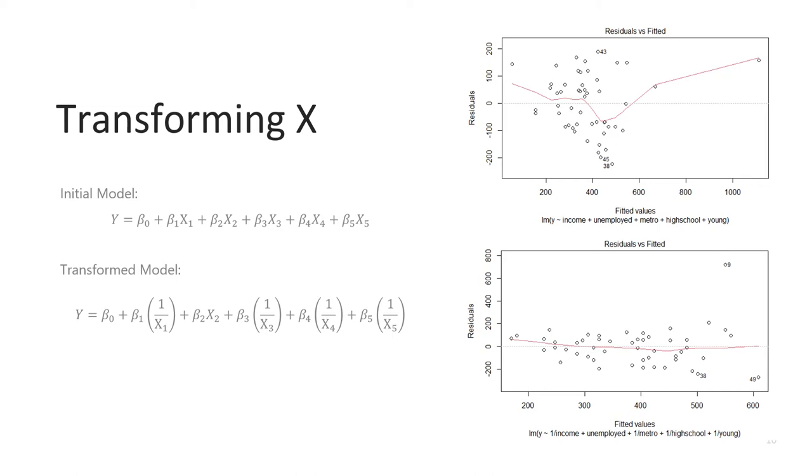Because our data violated linearity assumption but satisfied constant variance and normality, we looked at transforming some of the predictors to straighten out the data. This process is often a lot of trial and error, and after trying many different combinations of transformations, the following model produced the most linear output. As you can see, all predictors except unemployment have been inverted. On the right, we can compare the residuals versus fitted plots for the original model and the transform model. It is clear that the transform model corrects almost all of the non-linearity.